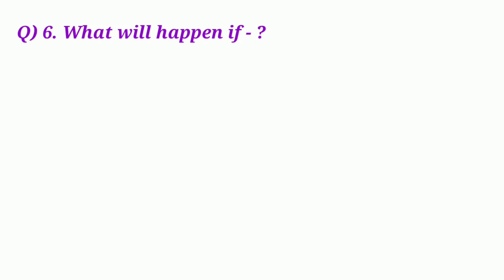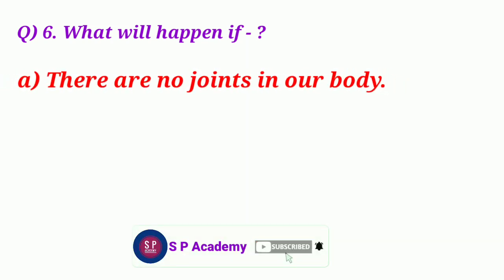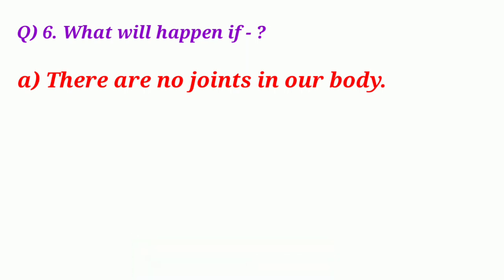Question 6: What will happen if there are no joints in our body? Answer: If there are no joints in our body, movement would not be possible.